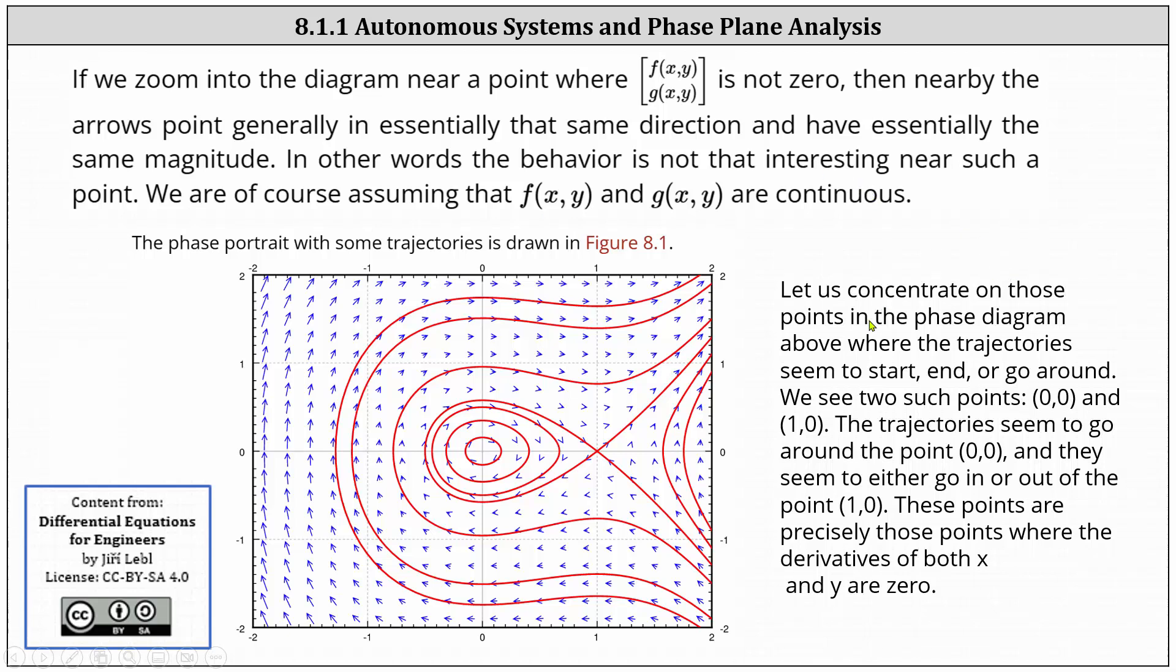Let us concentrate on those points in the phase diagram where the trajectories seem to start, end, or go around. We see two such points, (0,0), which is here, and (1,0), which is here. The trajectories seem to go around the point (0,0), and they seem to either go in or out of the point (1,0). These points are precisely those points where the derivatives of both x and y are zero.